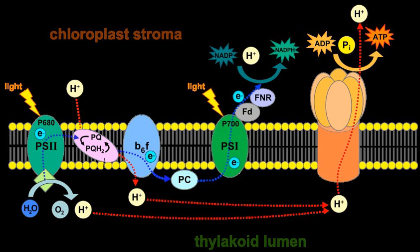PSI releases FNR into the stroma, where it reduces NADP+ to NADPH. Activities of the electron transport chain, especially from cytochrome B6F, lead to pumping of protons from the stroma to the lumen. The resulting transmembrane proton gradient is used to make ATP via ATP synthase.